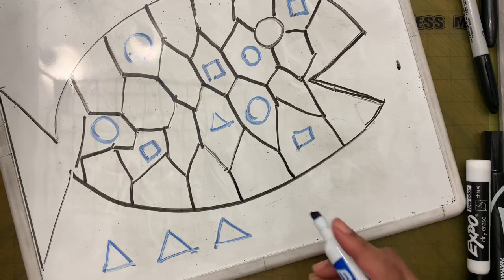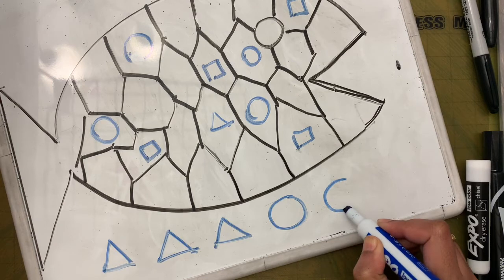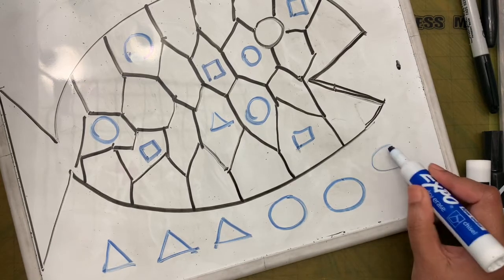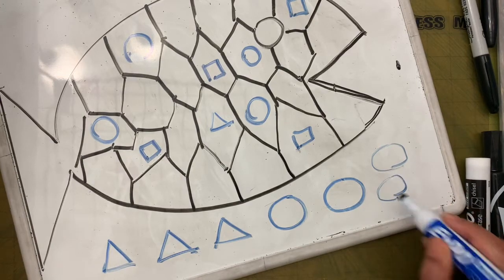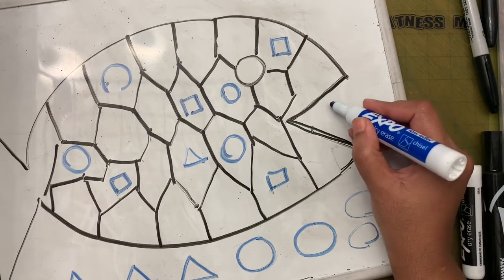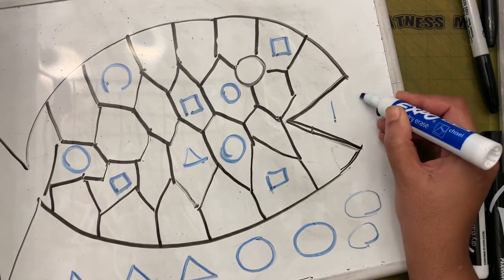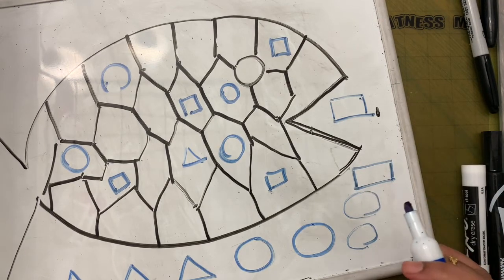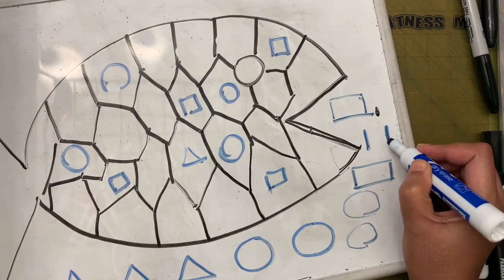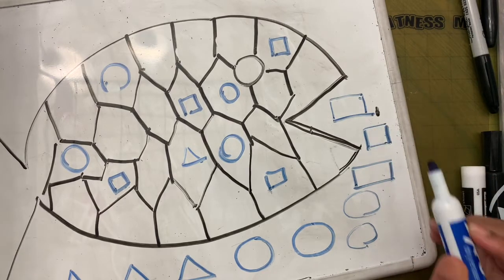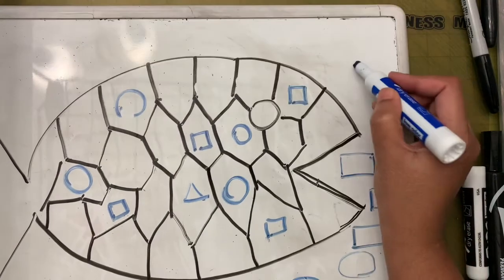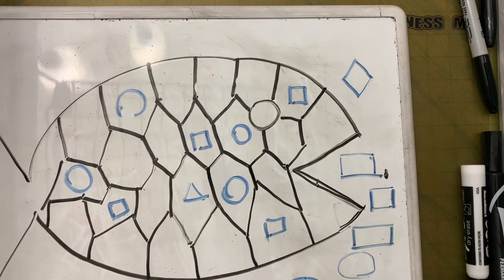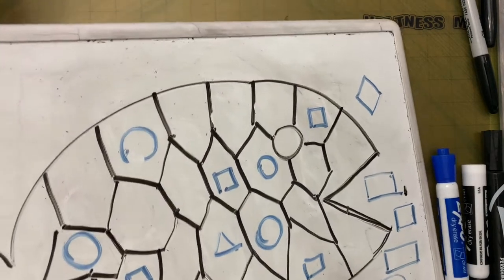To draw a circle, start with a C shape, then continue with a backward C and close it - C C, and you get a circle. For a rectangle, make a small line, another line the same length, and connect them. A square is the same but all sides equal. A diamond is an upside-down V and a right-side-up V. Practice these before drawing on your paper.